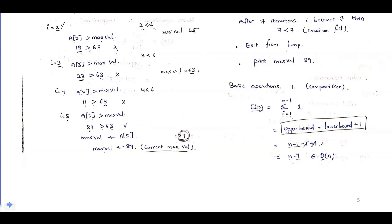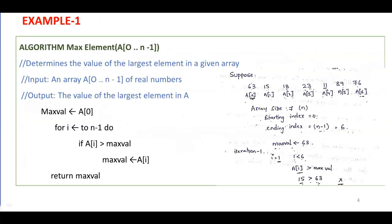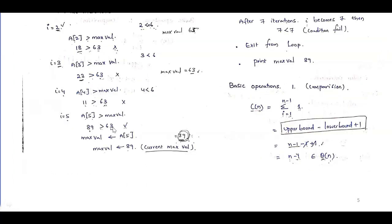After incrementing again, we take a[5], which is 89. Since 89 is greater than 63, the condition is true. According to the algorithm, when a[i] is greater than the max value, we assign that element to the max value. So now max value is assigned 89. Then we take the last element, 76. Since 76 is not greater than 89, max value remains 89.